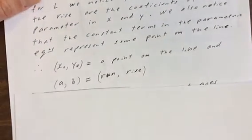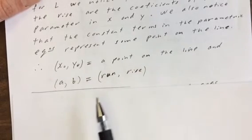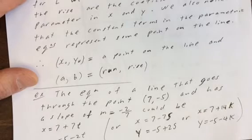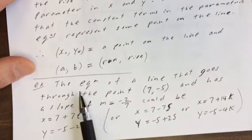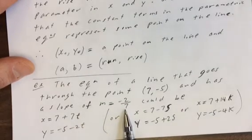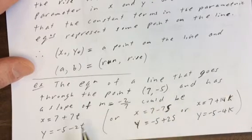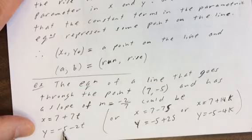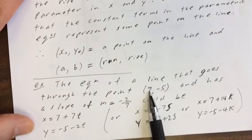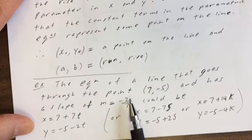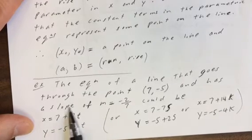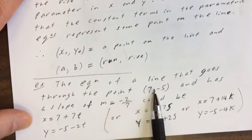Here's an example: write parametric equations for a line through the point (7, negative 5) with slope m equals negative 2 over 7. We get x equals 7 plus 7t and y equals negative 5 minus 2t. Here, x-naught and y-naught come from the given point (7, negative 5). The rise is negative 2, which is the coefficient of t in the y-equation, and the run is 7, which is the coefficient of t in the x-equation.